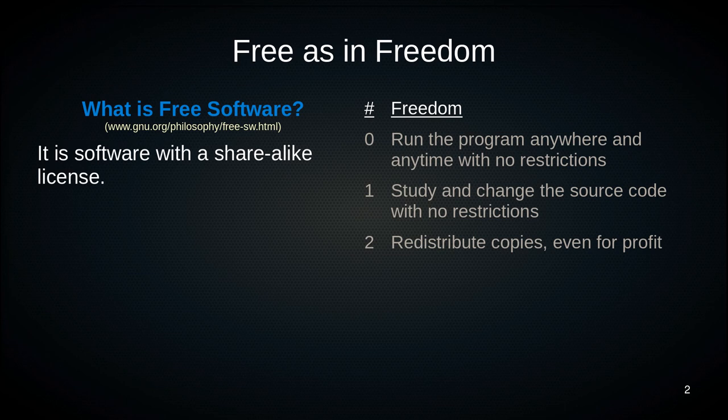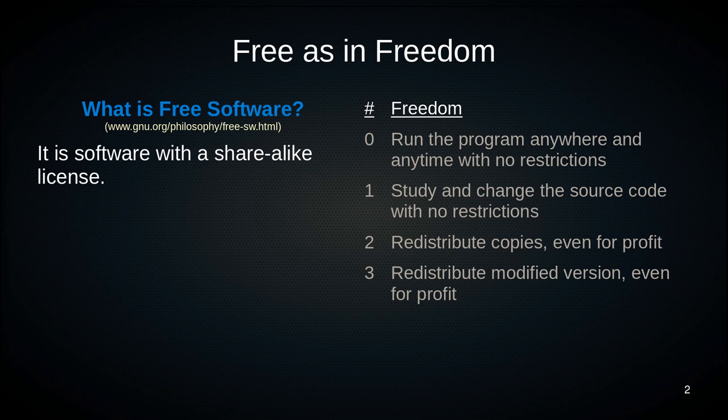You can modify it, make it better, make it exactly what you think is an ideal contact list, and then sell it. It's free software, so you can give it away or sell it. However, anyone can ask for the source code and you must give it to them, because you received it that way. You can redistribute modified copies, even for profit. These are the four freedoms commonly attributed to free and open source software.